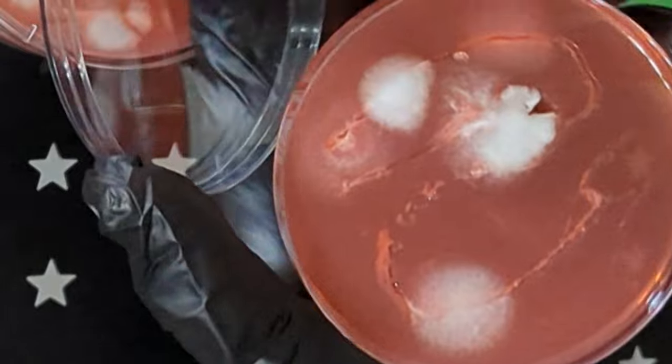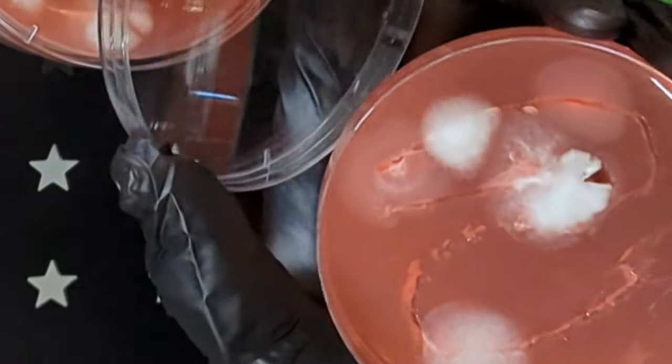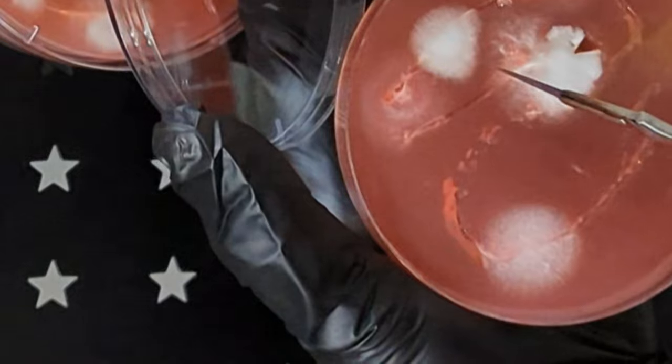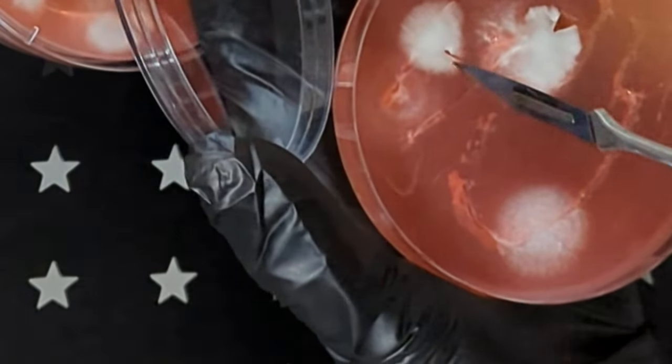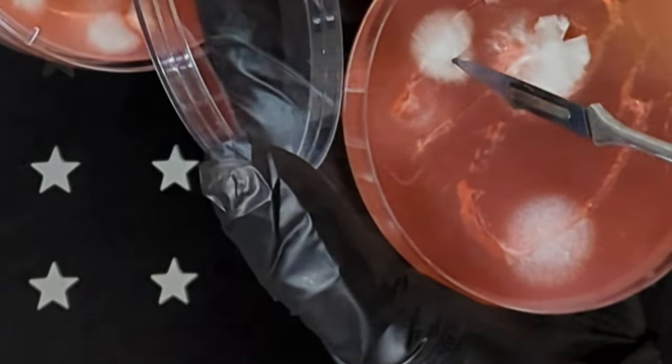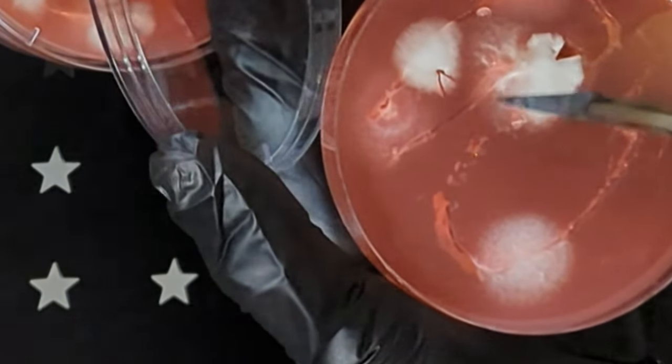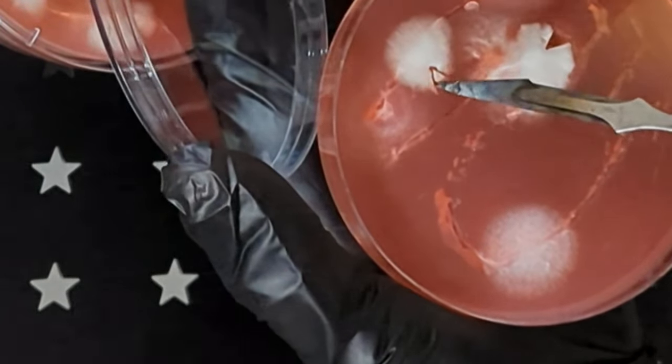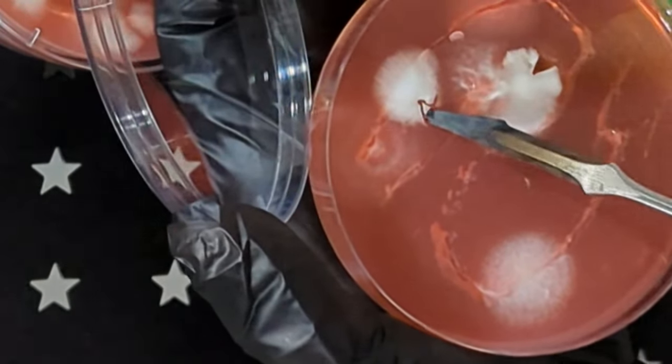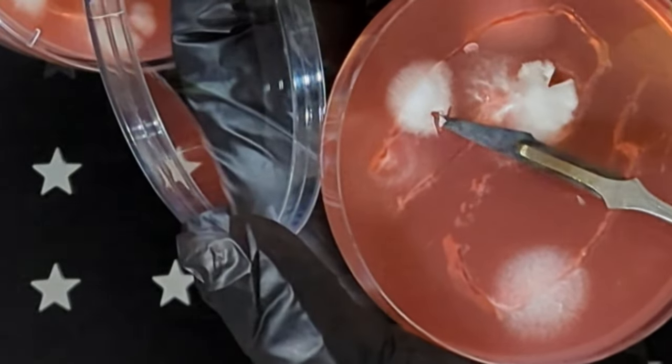When you first start working with mycelium on agar it can be hard to tell what you're looking at. Our mycelium has two basic looks: tomentose and rhizomorphic. Tomentose means wool or cotton-like. It's usually fluffy and can be very thick. It looks like someone took some cotton and stuck it in the agar.